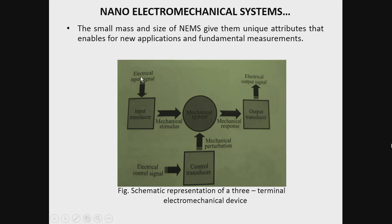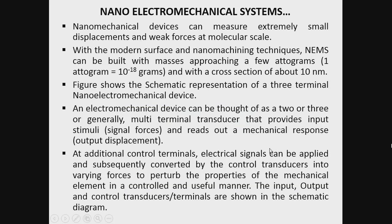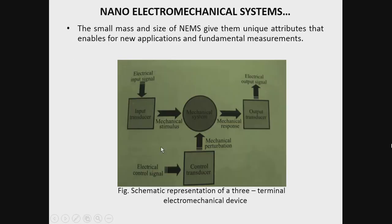So this three-terminal electromechanical system operates such that the input electrical stimulus gives a mechanical response in the form of a displacement or a force, and that is measured by the output transducer as an electrical output signal. That is the basic operation of an electromechanical system. An electromechanical device can be thought of as a two, three, or generally multi-terminal transducer that provides input stimuli — signal forces — and reads out a mechanical response, that is, output displacement.